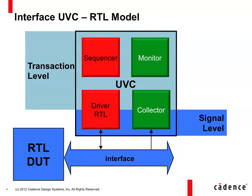Let's look at a typical use case. Most often, an interface UVC is hooked up to an RTL model. Here we have a very nice and clean symmetrical environment where the sequencer and the driver are working together to push traffic into the device, and the collector and the monitor work together to observe the traffic that happens on this device.